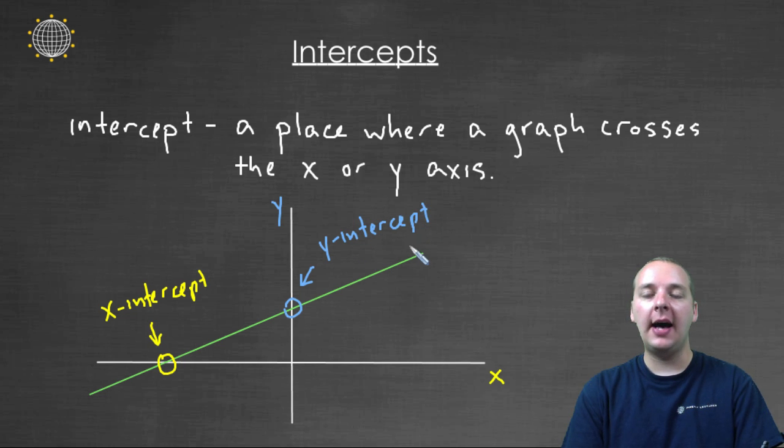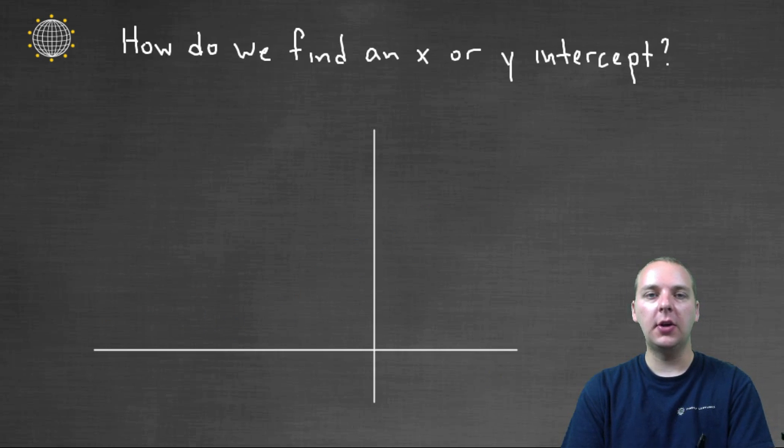So we're often asked to find the x and y-intercepts for an equation. What they're wanting is to find where it crosses over the x-axis. Now that brings up a good question though. If you're not provided with the graph of the equation, how do you find the x and y-intercepts? So let's talk about that for a minute.